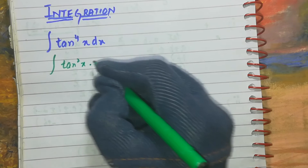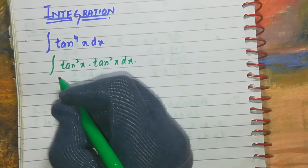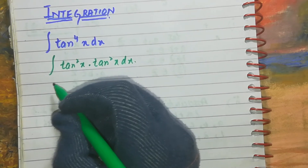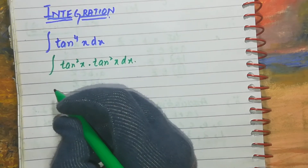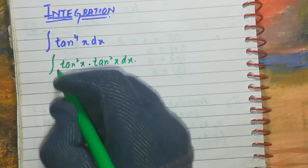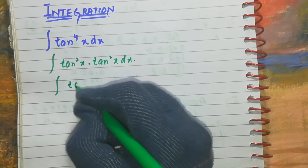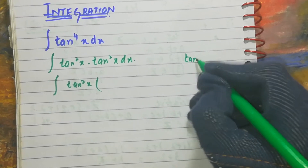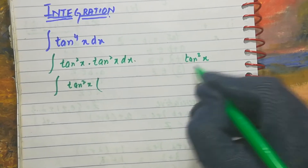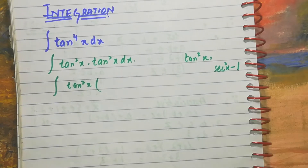First, write it as tan²x · tan²x dx. Now, as we know the identity of tan²x, we will split it using that identity. The identity of tan²x is sec²x − 1.